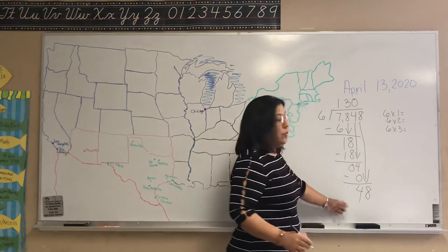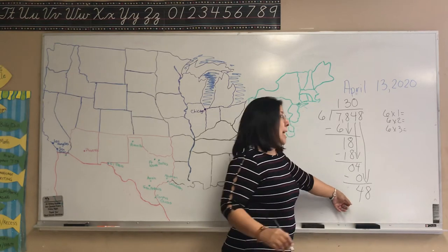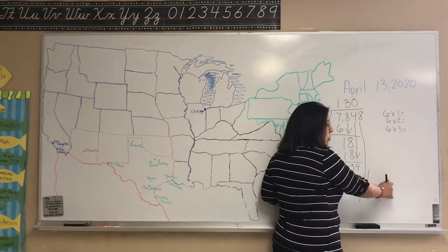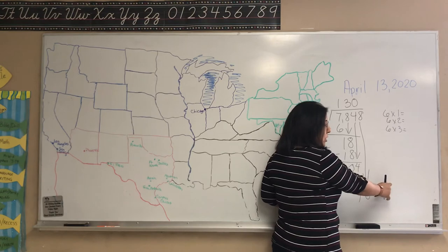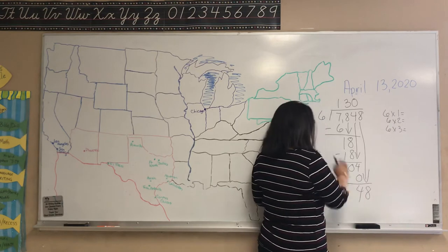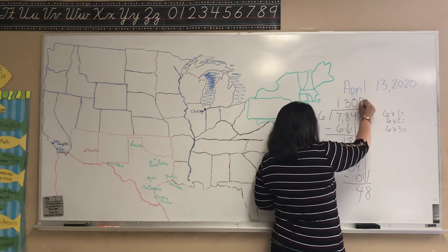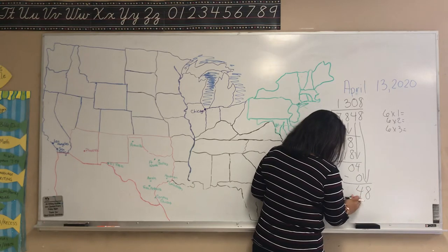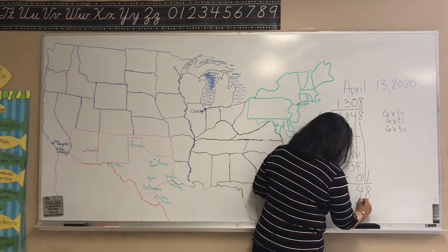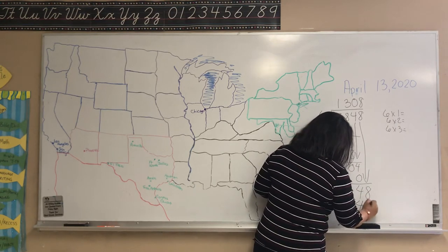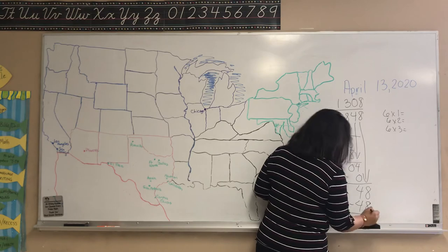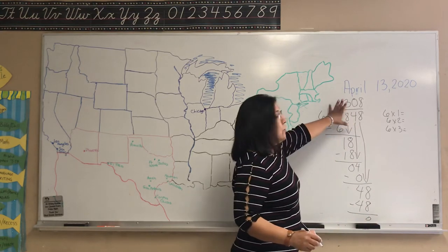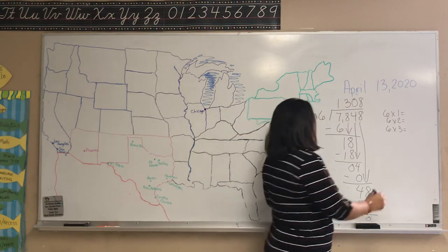Six will go into 48 eight times. Remember, do all your multiples on the side if you need to. Six will go into 48 eight times — six times eight is 48. And that is your final answer. There is no remainder on this problem.